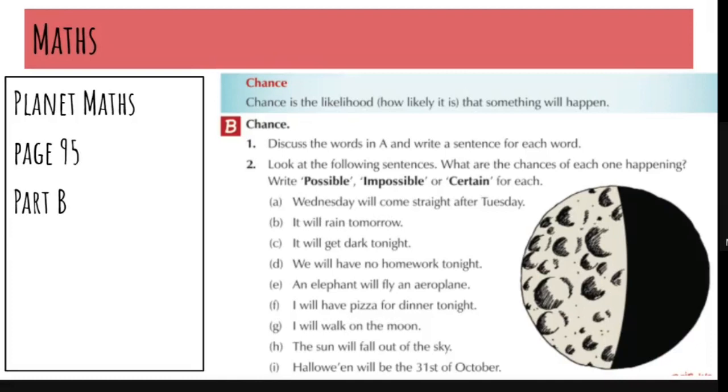C, it will get dark tonight. Yes, certain. It will get dark tonight. D, we will have no homework tonight. That one's possible. It depends on how much work you get done during the day. You might have a little bit of work left to do after school hours, but you might not. So that one is possible.